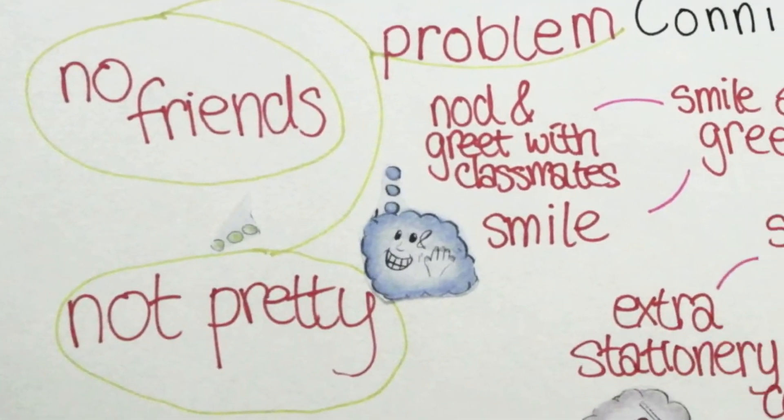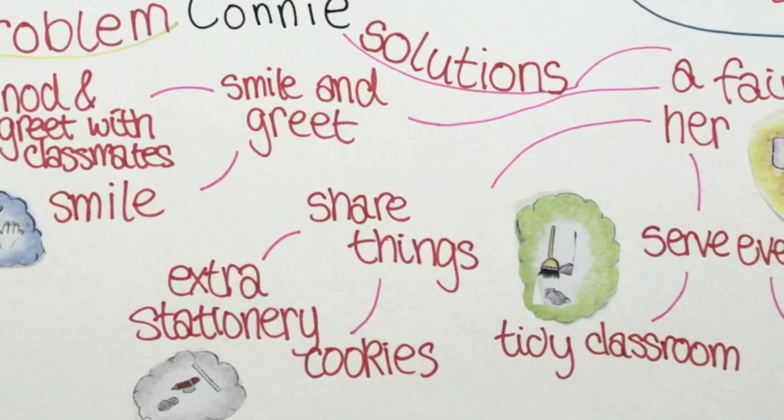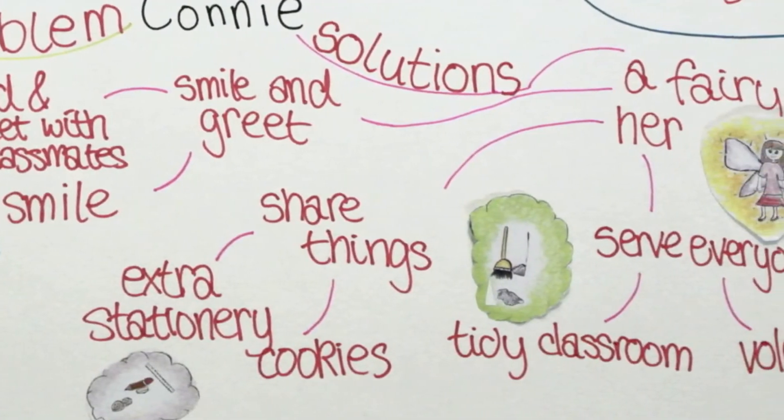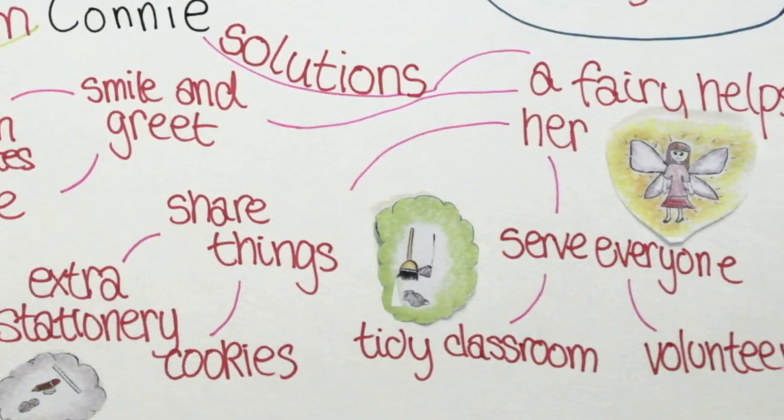One day, a beautiful glittering fairy agreed to make Connie pretty and asked her to do three things for the next three months. Connie followed the fairy's advice and in doing so, she learned to be beautiful by her actions alone.